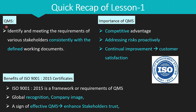As you remember in lesson one, we discussed QMS as a structured framework ensuring compliance or alignment with stakeholder needs through defined processes and policies. QMS first identifies the requirements of our stakeholders and meets their needs using working documents such as processes, policies and procedures. I also explained some of the key benefits of implementing a Quality Management System; by properly implementing QMS, our organization will gain a competitive advantage over its competitors.